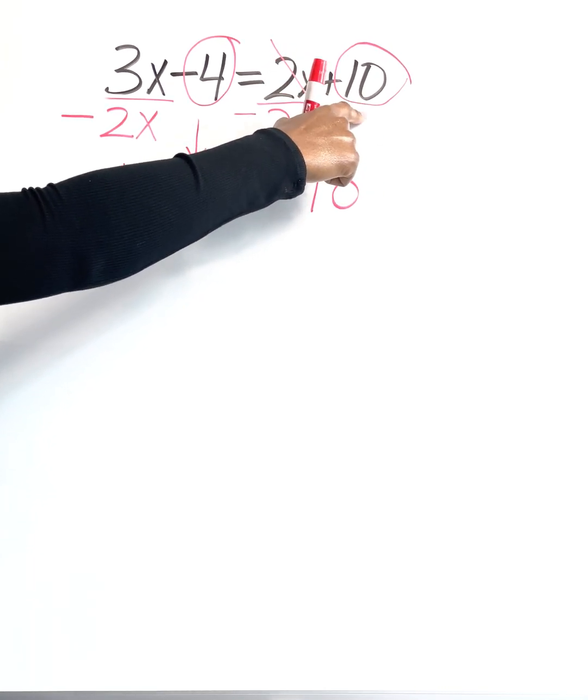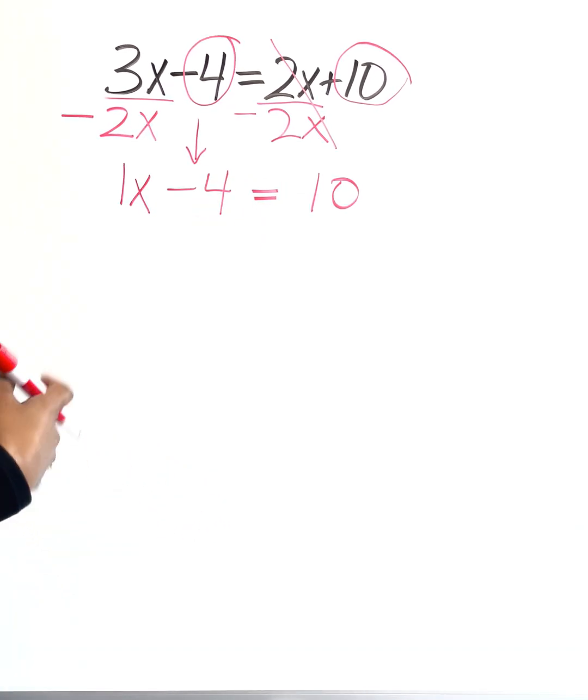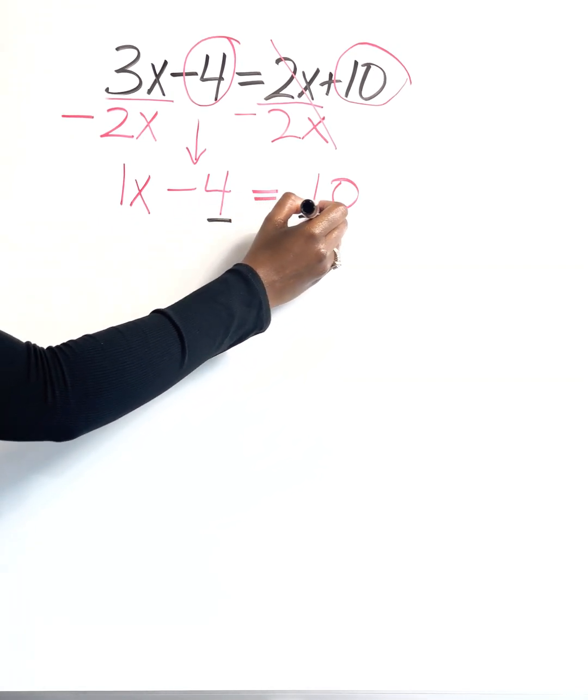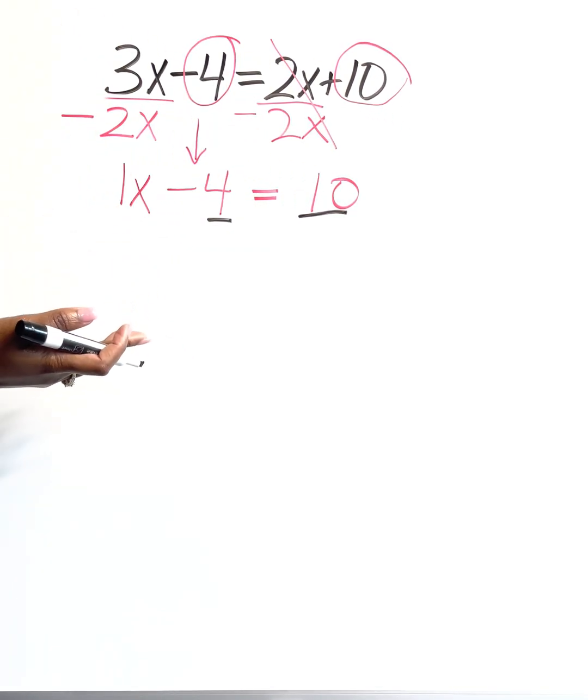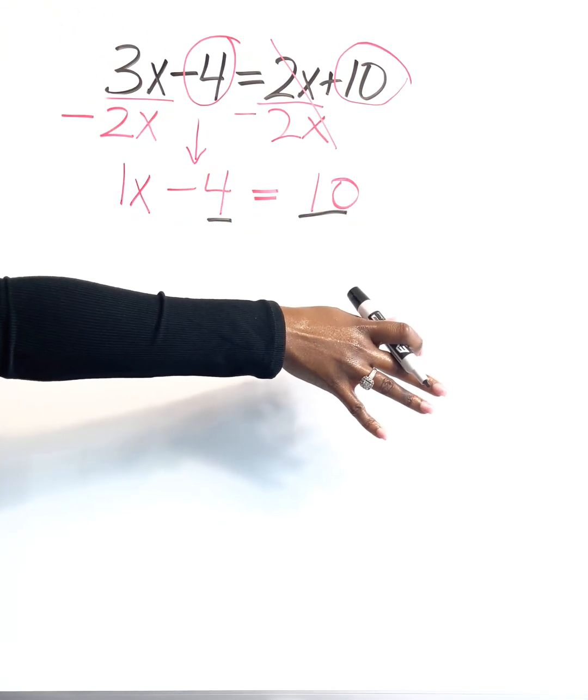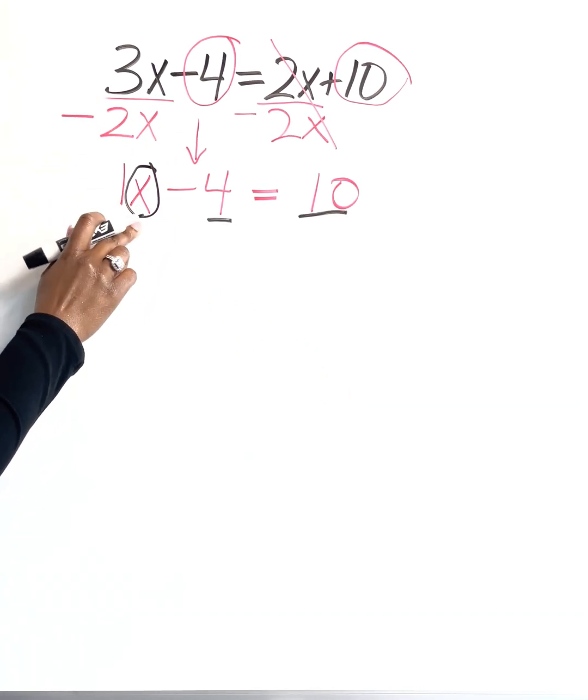So you see how that was plus 10? That means that's a positive 10. So I don't have to put a sign in front of it if I don't want to. And then I'm just going to continue with the same pattern. I know that 4 and 10 are like terms because we both circled those. They're both constants. So now I'm going to move my 4 to the opposite side. And why am I doing that? Because the goal is to get this variable, this x by itself. We want to isolate that.